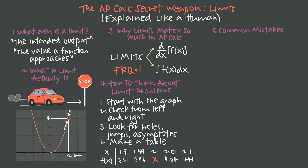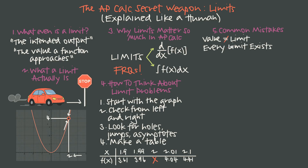The most common mistake is assuming the value of the function at a point always equals the value of the limit. A table might make it look like f(x) equals 4 at x equals 2, but all we can determine from the table is that the limit is 4. Looking at the graph, the hole at (2, 4) means the function is actually undefined there. So the limit as x goes to 2 is 4, but f(2) is undefined — the function's value isn't necessarily equal to the limit.